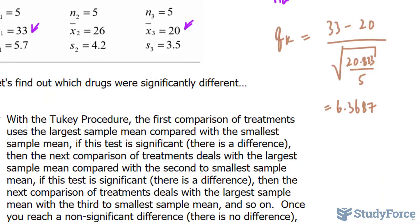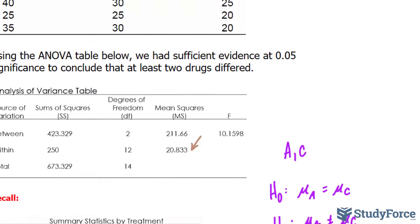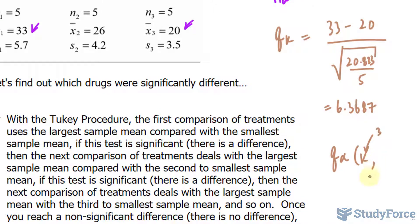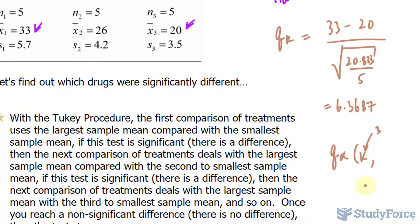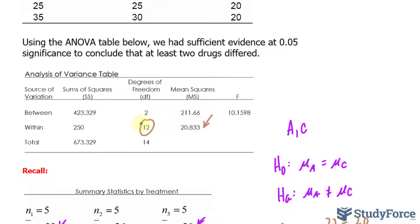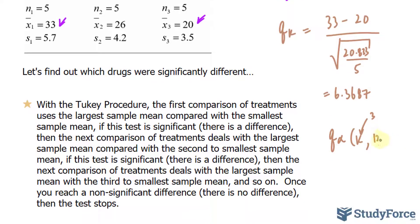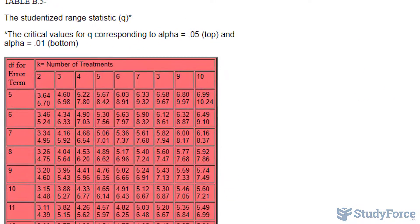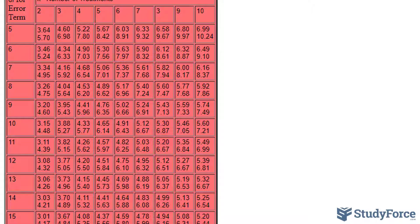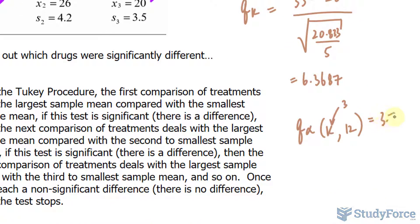This observed value will be compared with a critical value from a table. The critical value uses K, the total number of groups, which is 3 — drugs A, B, and C — alongside the degrees of freedom within, which from our previous investigation was 12. Using α = 0.05, we look up K = 3 and degrees of freedom = 12. We use the first value in the table since the second is for α = 0.01. The critical value Q alpha is 3.77.